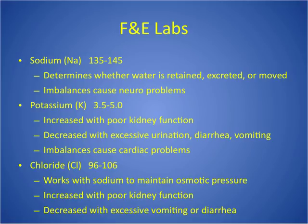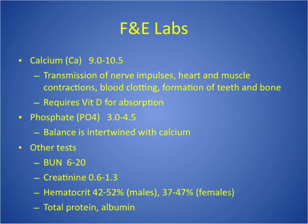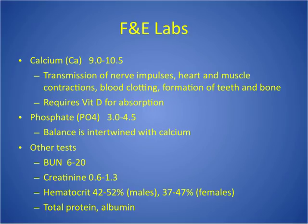Chloride: normal 96 to 106. It works with sodium to maintain osmotic pressure — sodium and chloride always go together. It increases with poor kidney function and decreases with vomiting and diarrhea. Chloride is also important in maintaining acid-base balance. Calcium: normal 9.0 to 10.5. It helps with nerve impulse transmission, affects the heart, muscles, and bones, and is involved in blood clotting. It requires vitamin D for absorption. Phosphate: normal 3.0 to 4.5. It has an inverse relationship with calcium — if phosphate changes, calcium changes in the opposite direction.